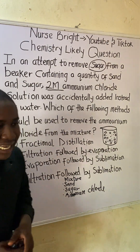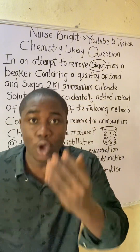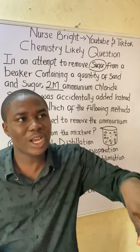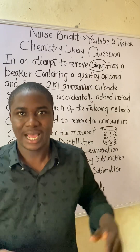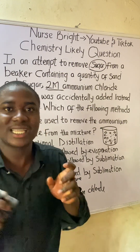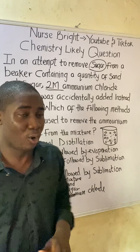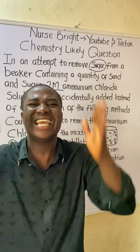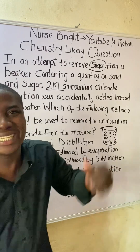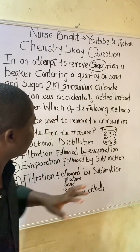Option A is fractional distillation. Fractional distillation cannot be used here because whenever we talk about fractional distillation we need to look for liquids and differences in boiling points. Every separation technique has its own principle, and fractional distillation works on the principle of difference in boiling points among liquids. We do not see any boiling points mentioned here, and sand is not a liquid, so option A is ruled out.